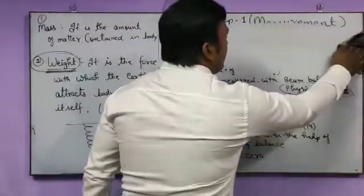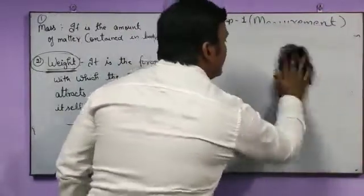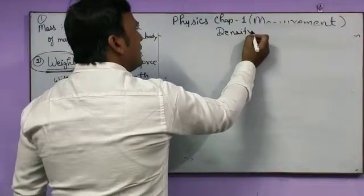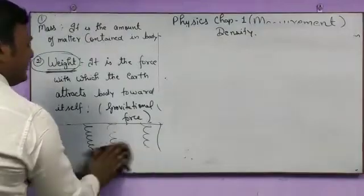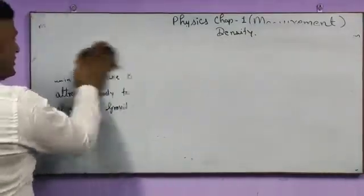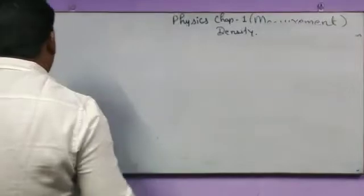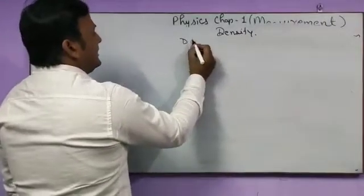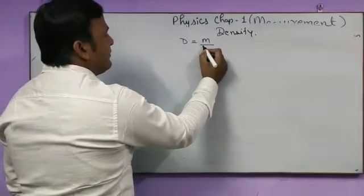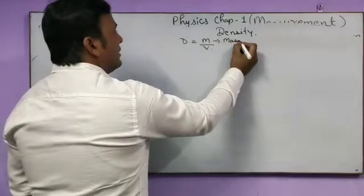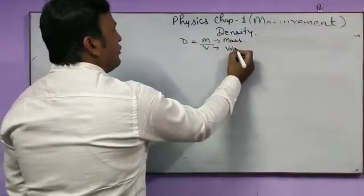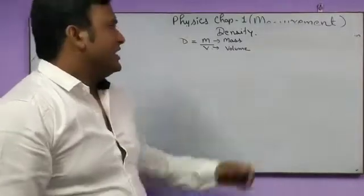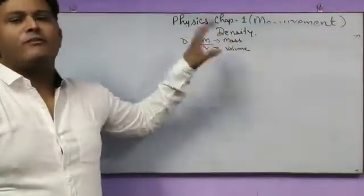One more topic from this chapter we have to study is density. Density simply with the formula is equal to M upon V, where M is the mass and V is the volume. By definition or by explanation we can say that density is the ratio of mass and volume.